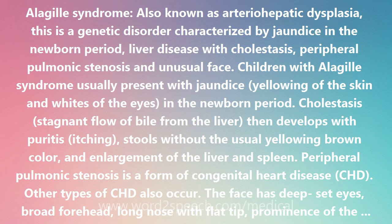Genetically, Alagille syndrome is an autosomal dominant trait, meaning that the gene is on a non-sex chromosome (an autosome), and a single copy of the Alagille gene is sufficient to produce the disease. The gene has been discovered on chromosome 20 in band 20p12. The syndrome was first described by D. Alagille in the French medical literature in 1969.